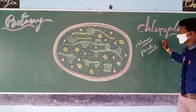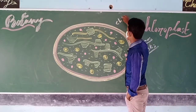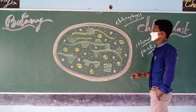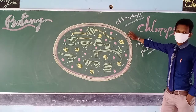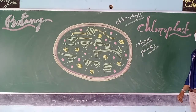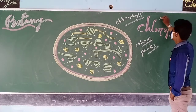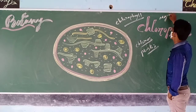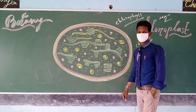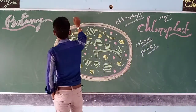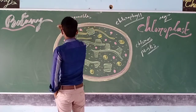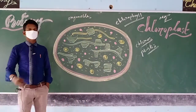Chloroplast contains a special pigment called chlorophyll. Due to this chlorophyll, the chloroplast is green in color. In this chlorophyll, the metal element present is Mg2+. Chloroplast is basically a cell organelle and a type of plastid.